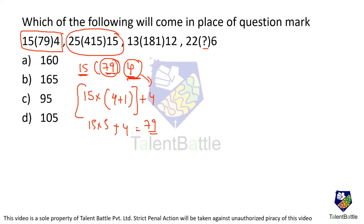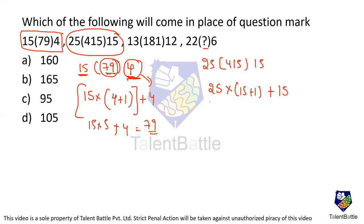Checking with the second case: 25, 4, 15, and 15. According to our logic it should be 25 into (15+1) plus 15, which is 25 into 16 = 400, and 400 plus 15 = 415 — satisfied. We can even apply it to the third case: 13 into (12+1) plus 12.